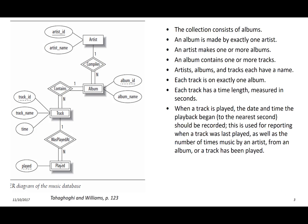We went through this in class. The basic process: on the left side are the requirements, and we use these requirements to generate the ER diagram. This is the ER diagram for the music database that we've discussed. What we want to talk about now in this video is this next step in the process where we map the ER diagram into the actual database tables.